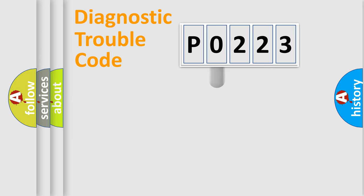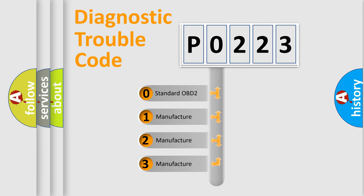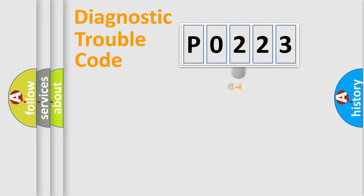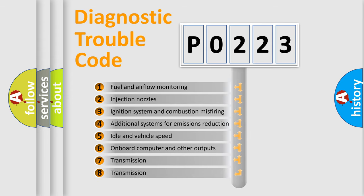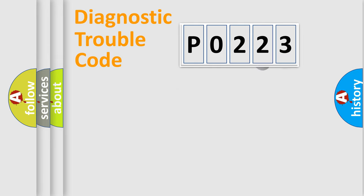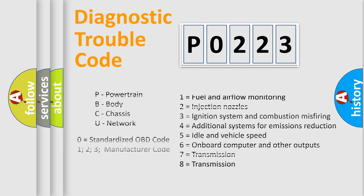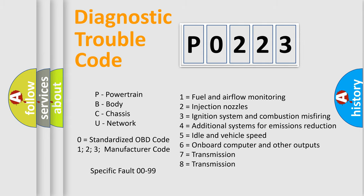This distribution is defined in the first character of the code. If the second character is expressed as 0, it is a standardized error. In the case of numbers 1, 2, or 3, it is a manufacturer-specific error. The third character specifies a subset of errors. This distribution is valid only for the standardized DTC code, and only the last two characters define the specific fault of the group.